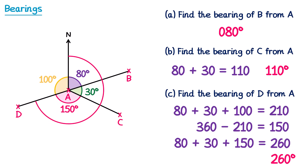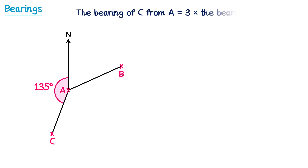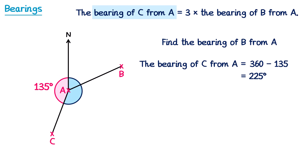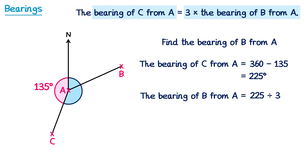There was another fast way of doing that question — if you can spot it, let me know in the comments. For this next question, we're told the bearing of C from A is three times the bearing of B from A, and the question asks us to find the bearing of B from A. The bearing of C from A means we're stood at A facing north and turned clockwise to face C. We can work this bearing out since we have angles around a point: 360 take away 135 is 225 degrees. We're told this is three times the bearing of B from A, so we divide 225 by three, which gives us 75 degrees, or a bearing of 075 — remembering three figures.